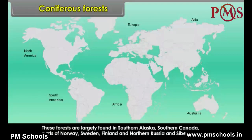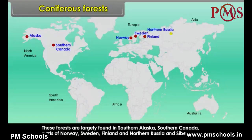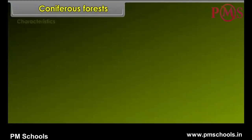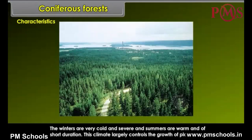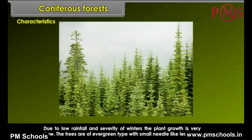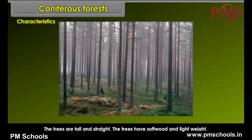Coniferous Forests. These forests are largely found in southern Alaska, southern Canada, parts of Norway, Sweden, Finland and northern Russia and Siberia. Characteristics: The winters are very cold and severe and summers are warm and of short duration. This climate largely controls the growth of plant life. Due to low rainfall and severity of winters, the plant growth is very slow. The trees are of evergreen type with small needle-like leaves.